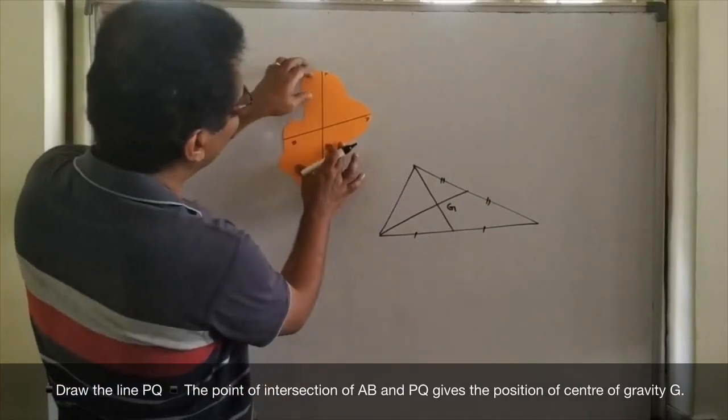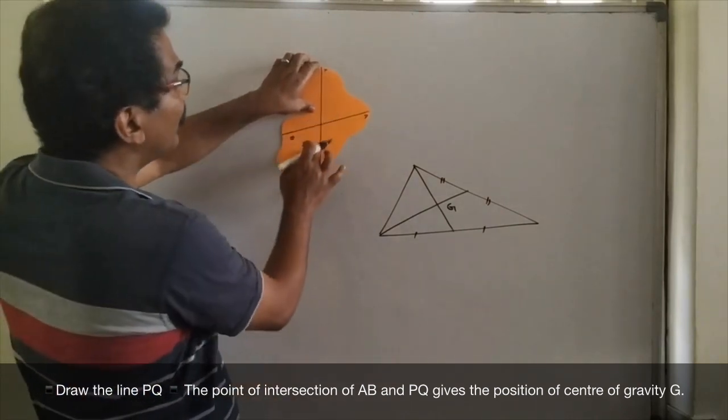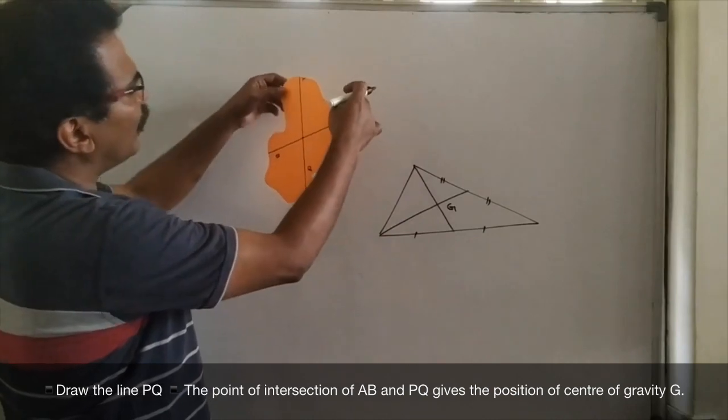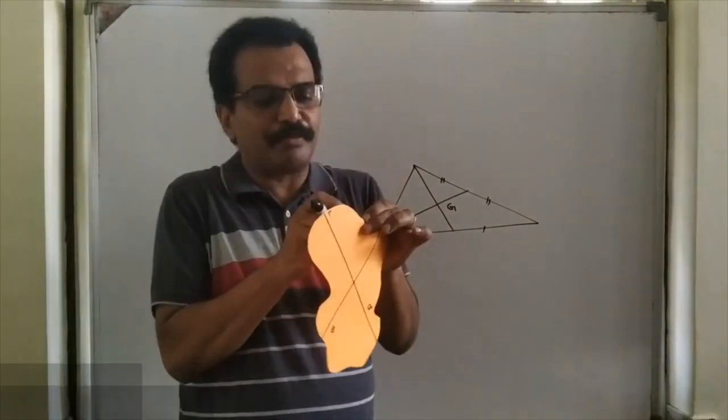The point of intersection of these lines, this will be the center of gravity. This is the center of gravity. If you want to confirm that, I can go for one more point of suspension.